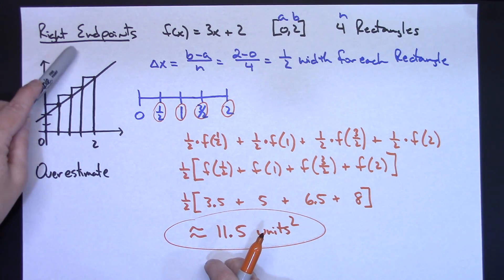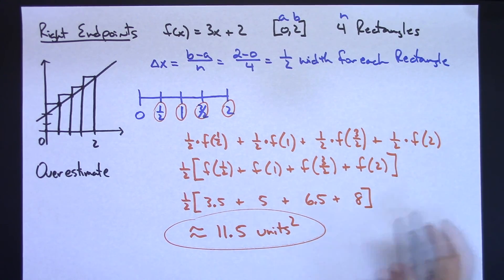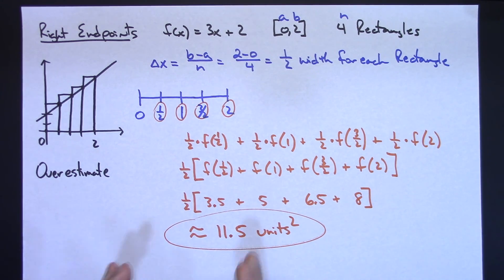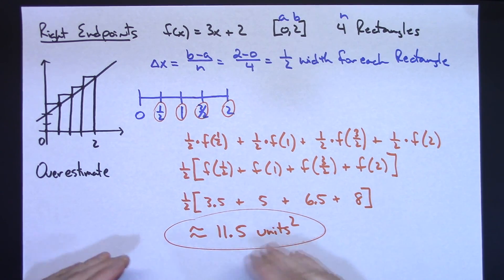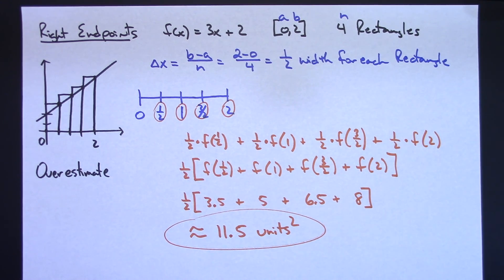So just one example using left endpoints and right endpoints, analyzing what's happening and how you calculate the area under the curve. This would be a really nice lesson or introduction before getting into Riemann sums or definite integrals. Thanks for watching and don't forget to subscribe to the channel.